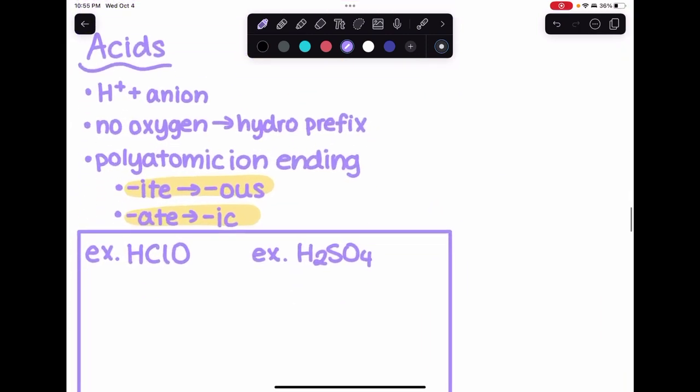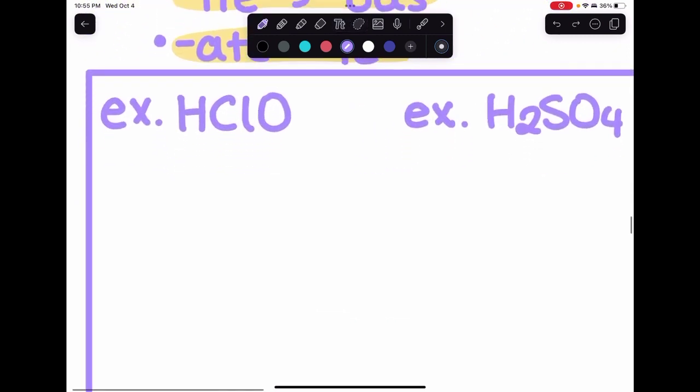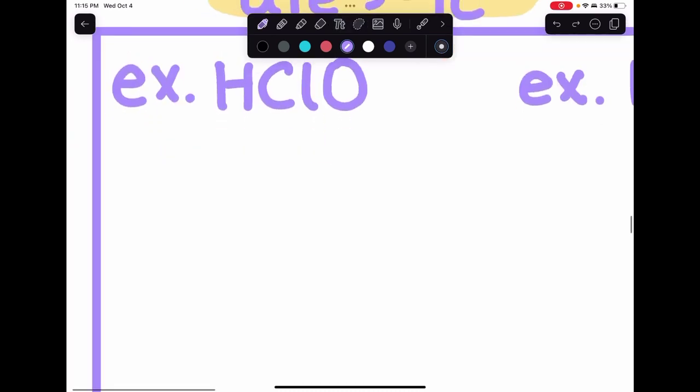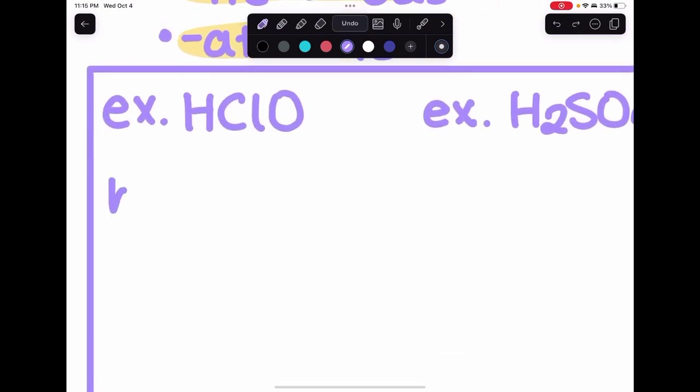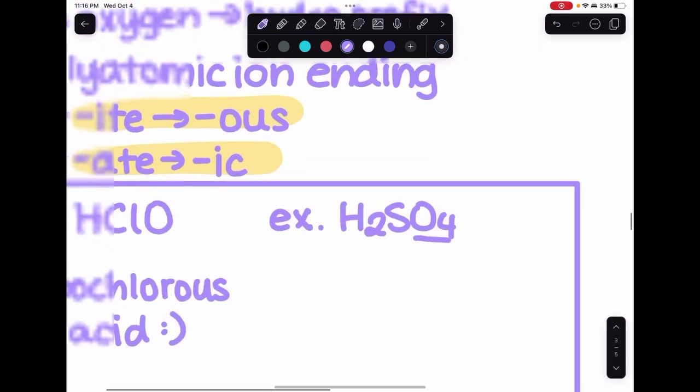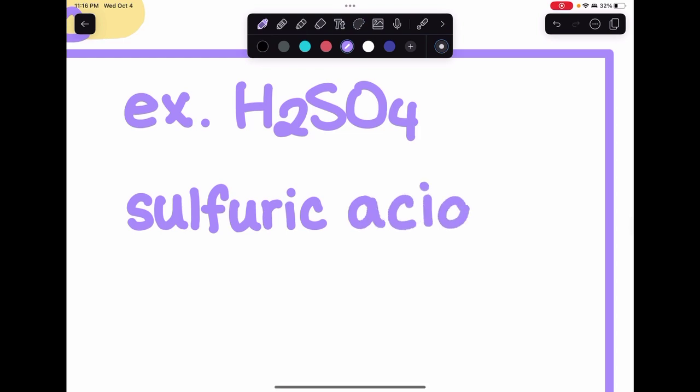Acids: these are not scary. Just remember these polyatomic ion endings. This one is a little tricky. This is a hypochlorite ion, so remember it has the -ite ending and it has an oxygen here, so there's no hydro prefix. We're gonna do hypochlorous acid. And this one, oxygen, no need for hydro prefix. This is a sulfate ion, so we're gonna do sulfuric, not sulfic. Sulfuric. Just remember that there's no kind of rule to do that, it's just a weird little exception thing.